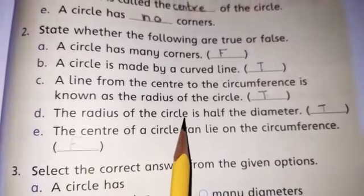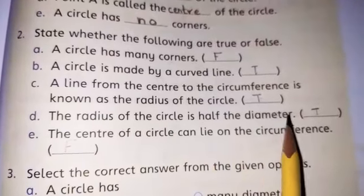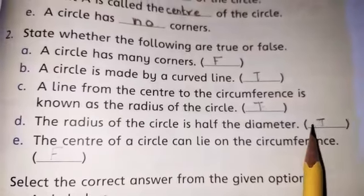The radius of the circle is half of the diameter. Yes, it is true.